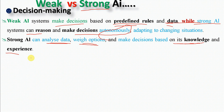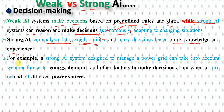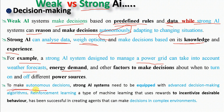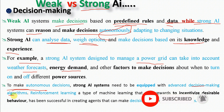For example, a strong AI system designed to manage a power grid can take into account weather forecasting, energy demand, and other factors to make autonomous decisions about which power resources to turn on or off.